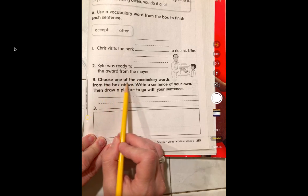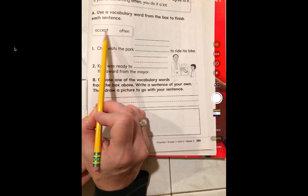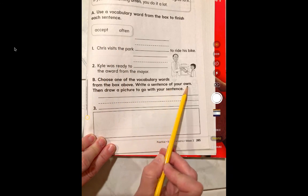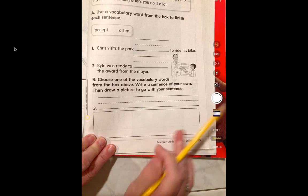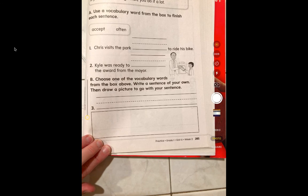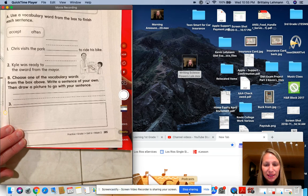Then you will choose one of the vocabulary words from the box above. So either accept or often. Write a sentence of your own, then draw a picture to go with your sentence. And boys and girls, that will be your language arts assignment for today. You also have that reading component. Do not forget the reading. Thank you. And I hope this lesson was helpful.